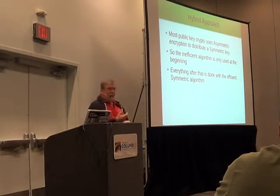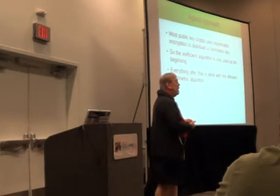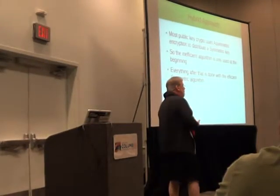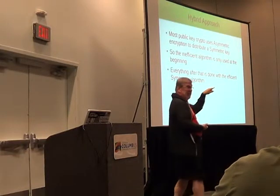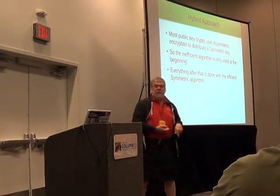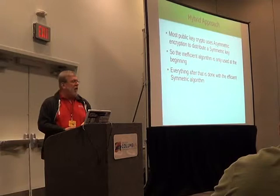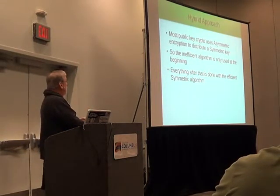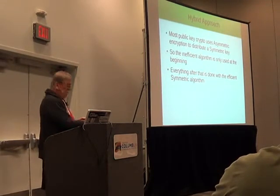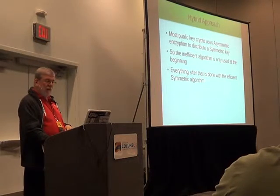That symmetric key is encrypted using Tom's public key, and I send it to him. Tom uses his super secret private key that nobody knows about to decrypt everything. But once he's decrypted the key, everything else happens using the symmetric key, so it's much more efficient that way.